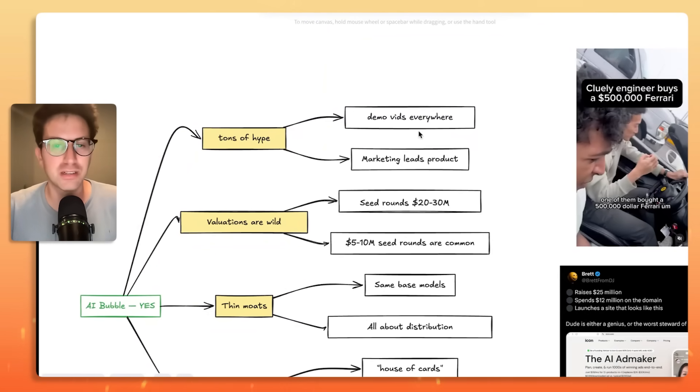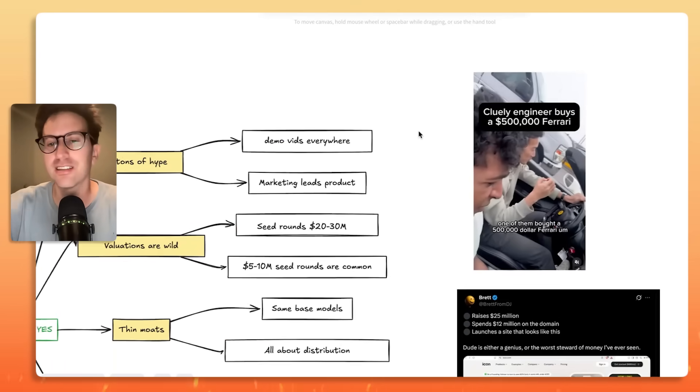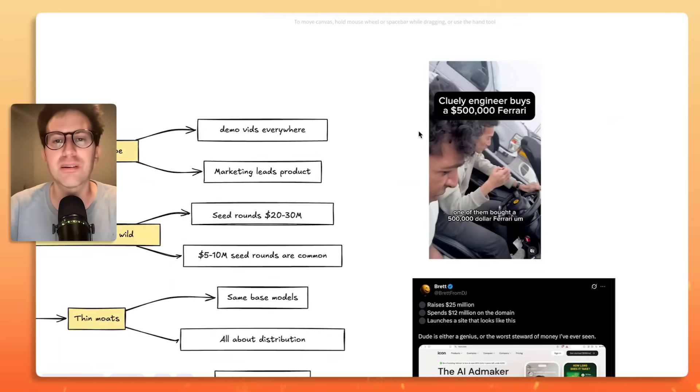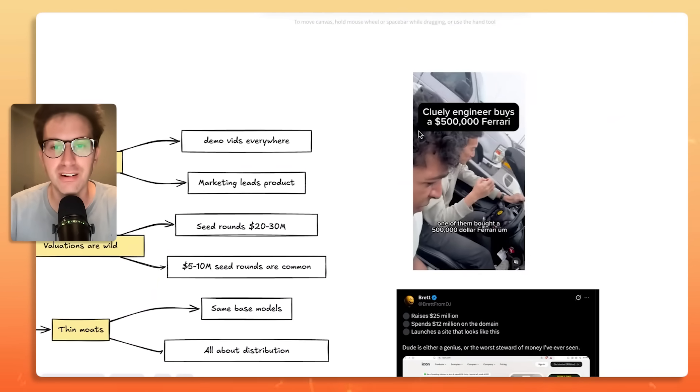The other thing about tons of hype is people say that marketing is trumping the AI products. That there's a lot of products that aren't that good relative to their marketing. Now, I actually haven't used the Clueli product. But Clueli is like the poster child for the best marketing right now for AI startups. I saw this Instagram post today. Clueli engineer buys a $500,000 Ferrari. This is just marketing that gets people talking. Now, the question is, is the Clueli product as good as their marketing? Maybe it is. Maybe it's even better.